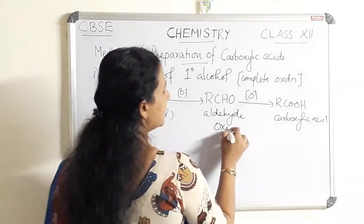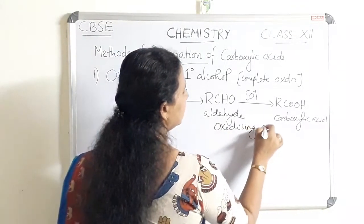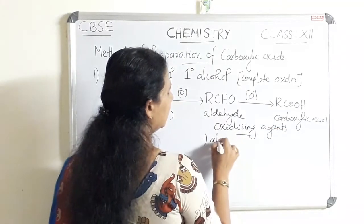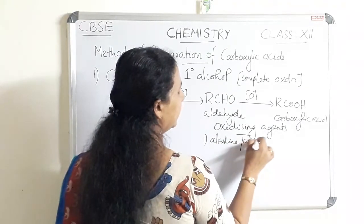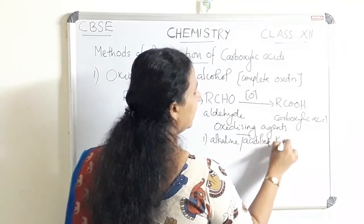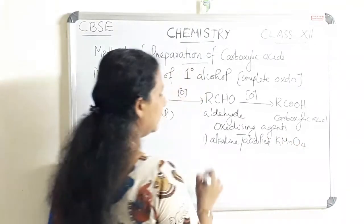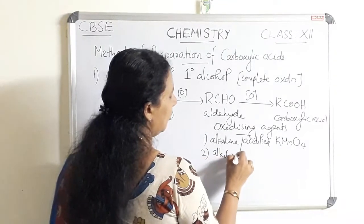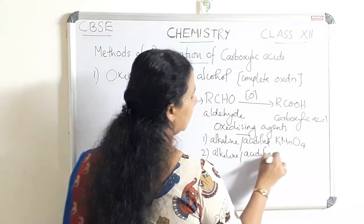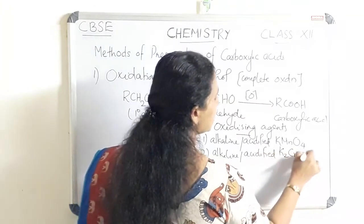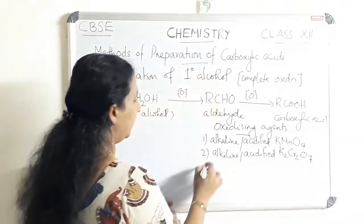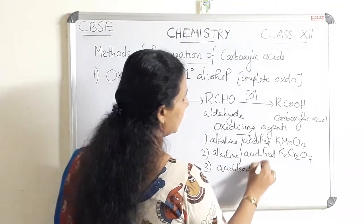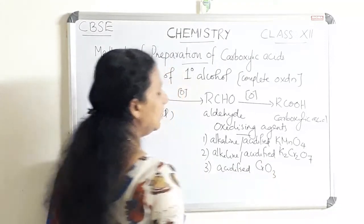What are the strong oxidizing agents? The oxidizing agents can be: first, alkaline or acidified KMnO4 (potassium permanganate); second, alkaline or acidified K2Cr2O7 (potassium dichromate); and third, acidified CrO3 (chromium trioxide).